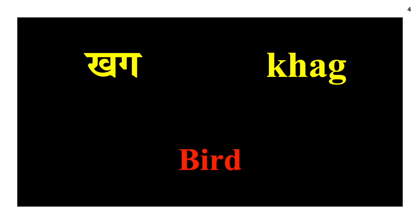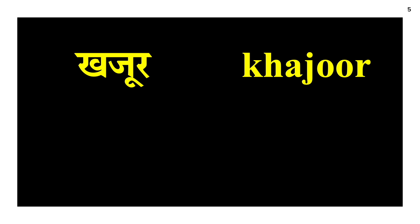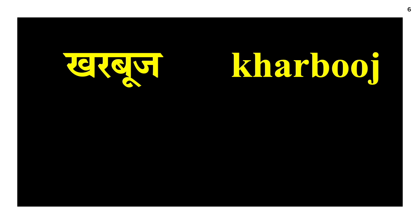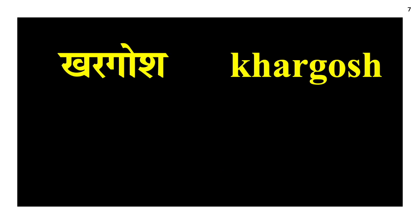Khajur — the fruit, a date. Kharbooj — melon, again a fruit. Khargosh — rabbit.